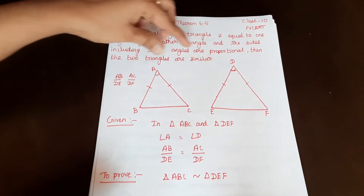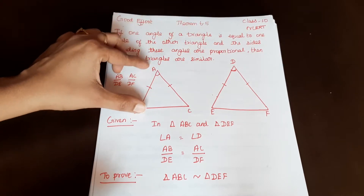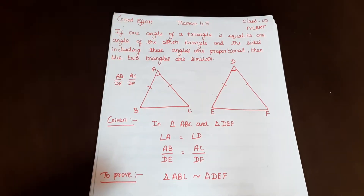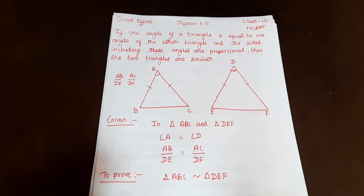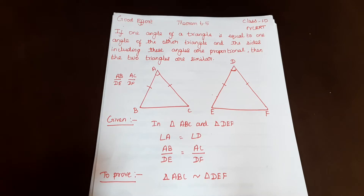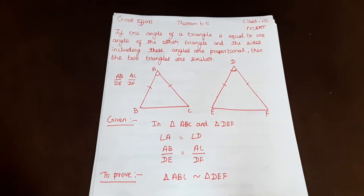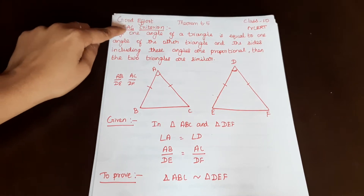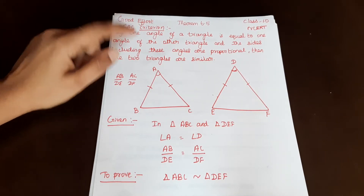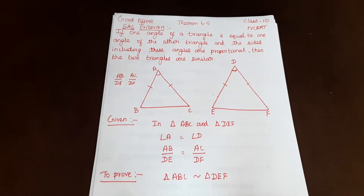So the angles are equal, and the sides are proportional. This is the SAS criterion — the Side-Angle-Side criterion.